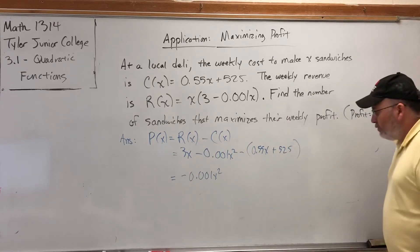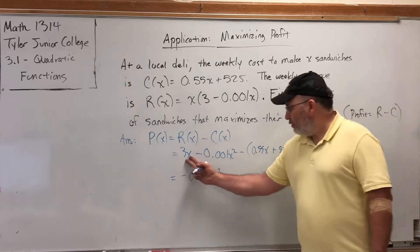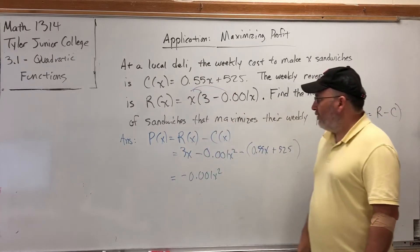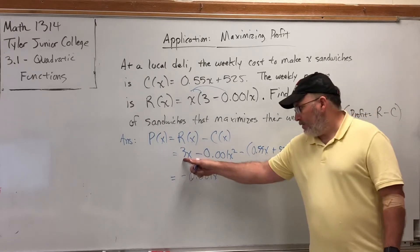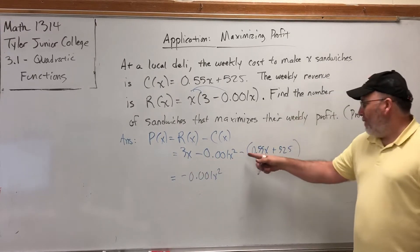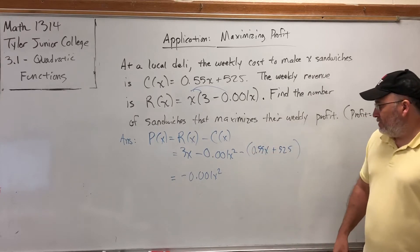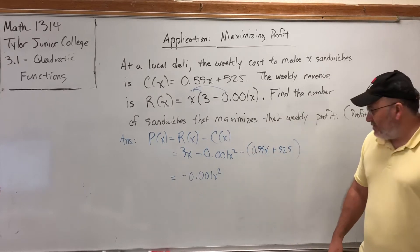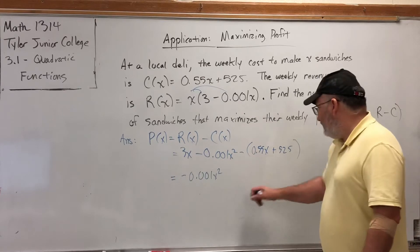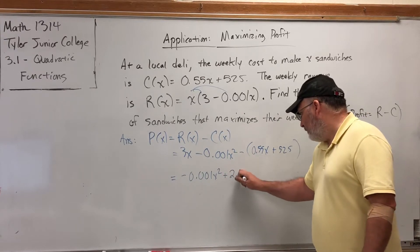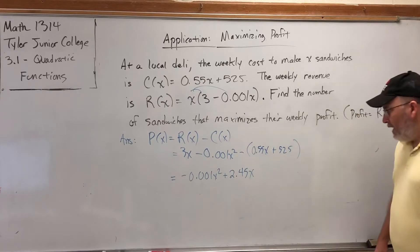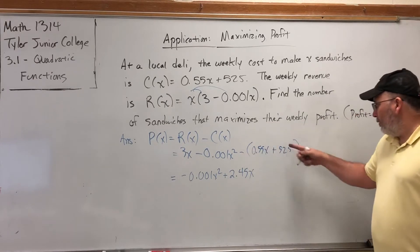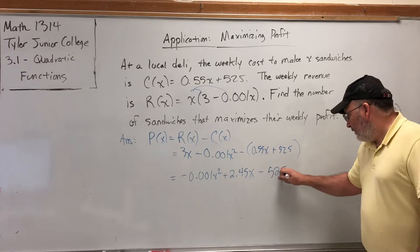We will have two X terms. So we have the 3X here from distributing across the revenue function. And we have a minus 0.55X. So think of it as $3 per sandwich that we bring in minus 55 cents per sandwich that we spend to make the sandwich. $3 minus 55 cents is positive $2.45. So plus 2.45X. And the only constant term is the one we get when we distribute the negative here. Negative 525.